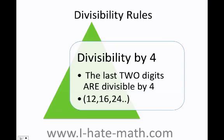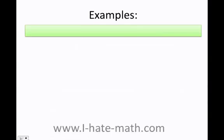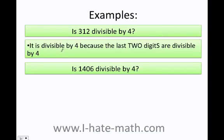What is the divisibility rule by 4? The last two digits have to be divisible by 4. For example, 12, 16, and 24. Is 312 divisible by 4? I look at the last two digits and I see that yes, it's divisible by 4, because 4 times 3 is 12. Therefore this number is divisible by 4.